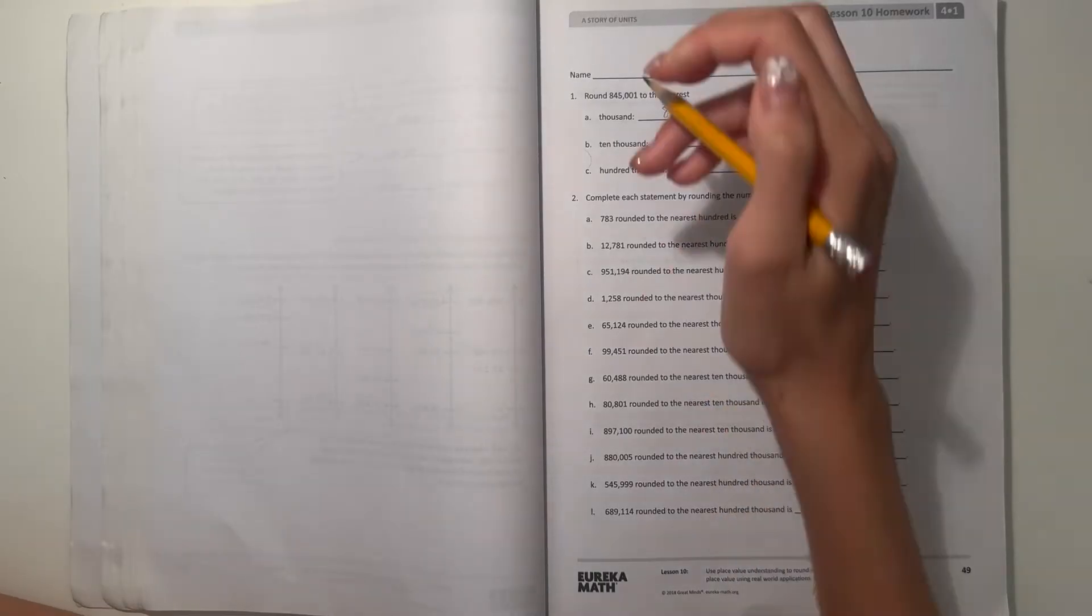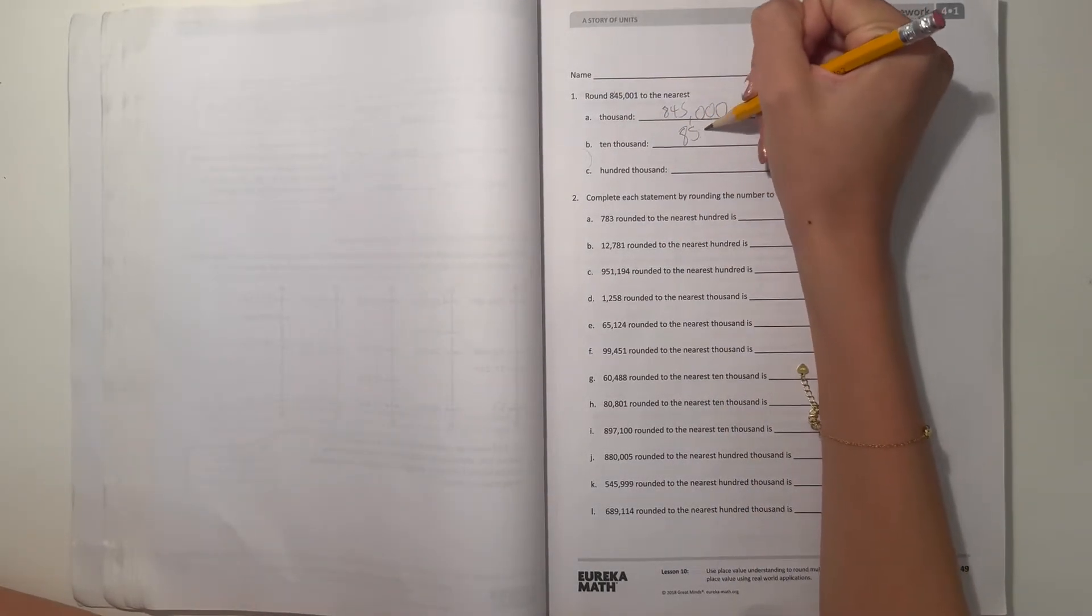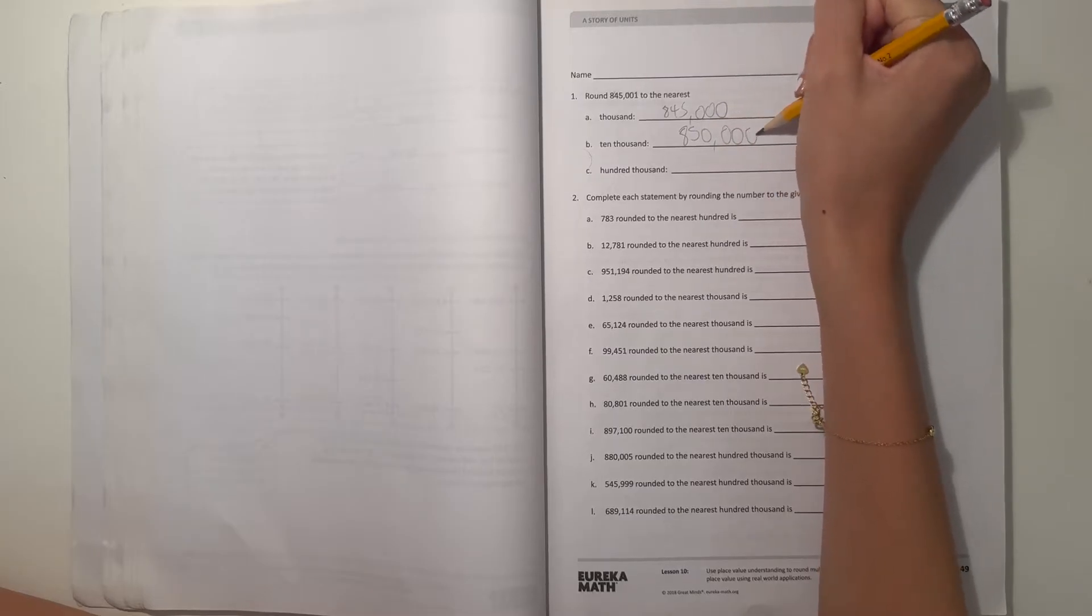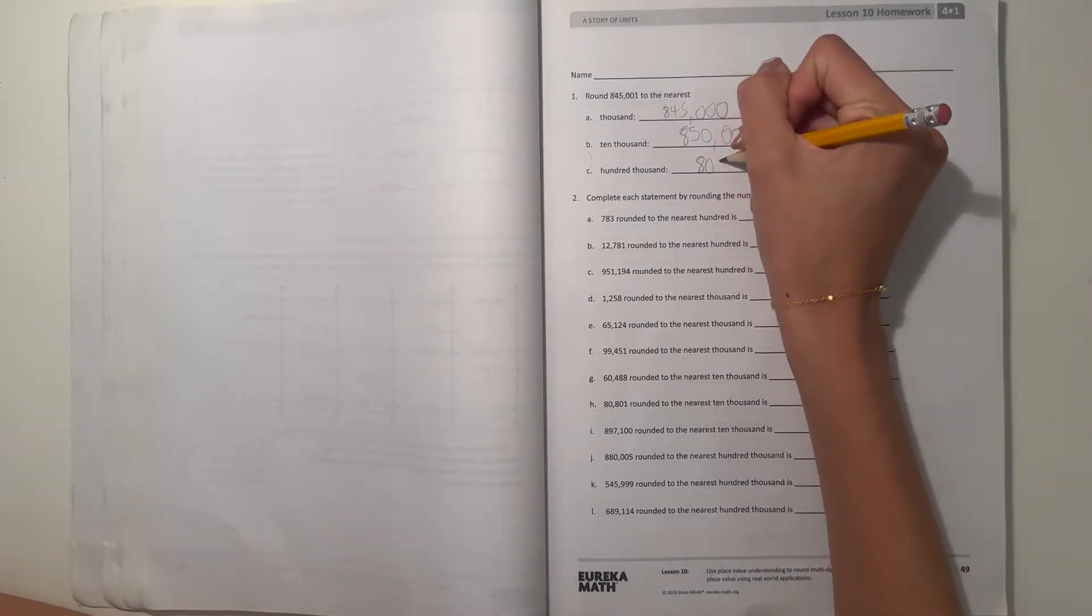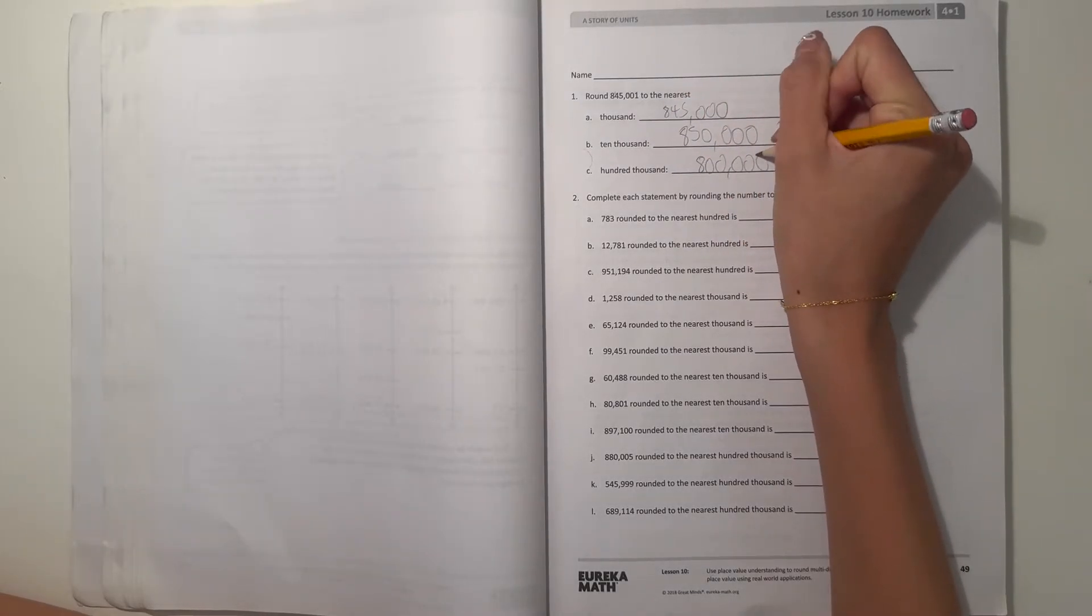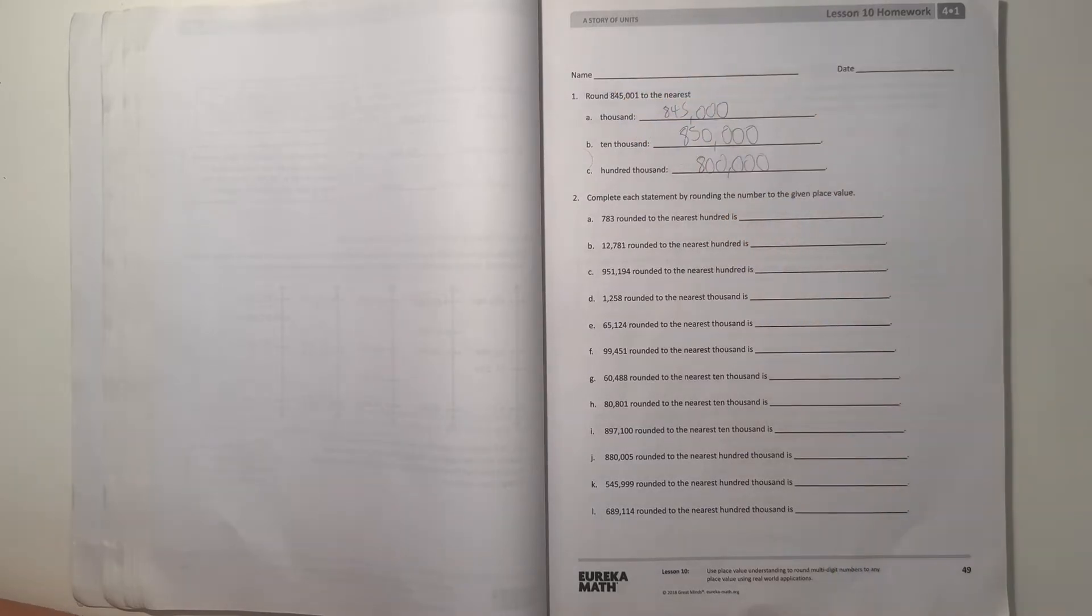And then 10,000 over this one, we round it to 850,000 because we have 845,000 and the 5 would round the whole number up to 850,000. And now 100,000, we would round it to 800,000. We round it down because we need at least 850,000 to round it up to 900,000.